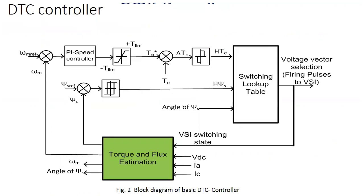For a quick review of how Direct Torque Control works: the actual speed is compared with the speed reference, and the error is given to a PI speed controller. Based on the error, a required torque command is generated — the torque at which the motor should accelerate or decelerate to reduce the error to zero. This torque command is compared with actual torque, and the error is given to a three-level hysteresis torque controller, which outputs +1 to increase torque, -1 to reduce torque, and 0 for no change.